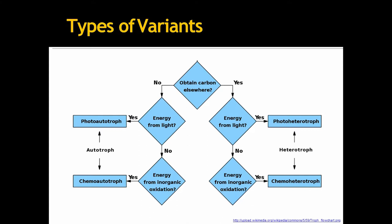The autotrophs are those which get their energy from light and do not obtain carbon elsewhere. For example, photosynthetic plants. Chemoautotrophs are those who get their energy from inorganic oxidation. For example, many bacteria from kingdom archaea or methanogens.